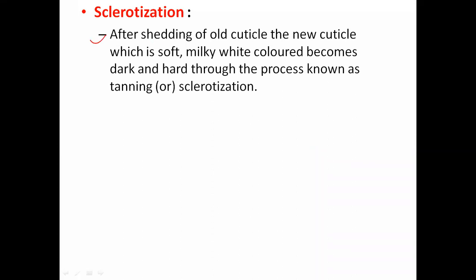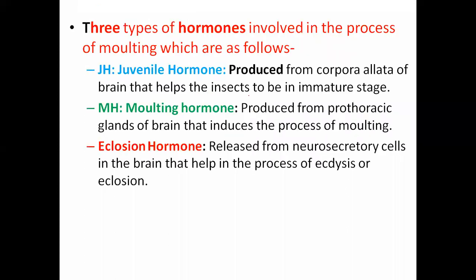The third process is sclerotization, also called tanning. After the shedding of the old cuticle, the newly formed cuticle looks soft and milky white in color. It then becomes dark and finally becomes hard. This continuous process is called tanning or sclerotization.